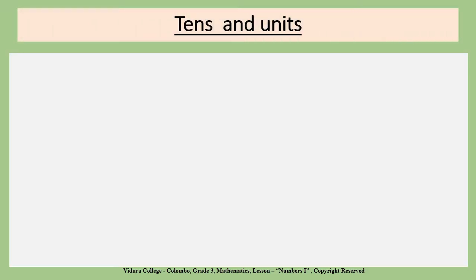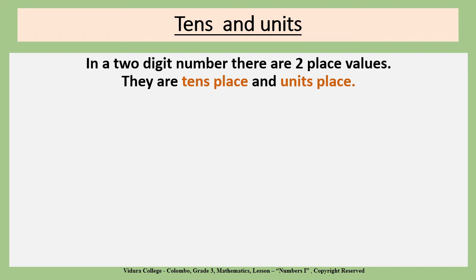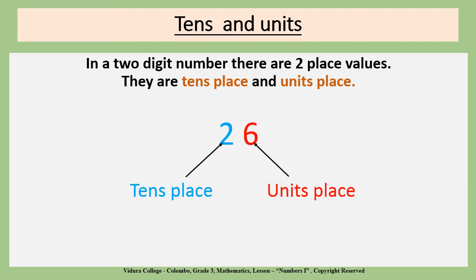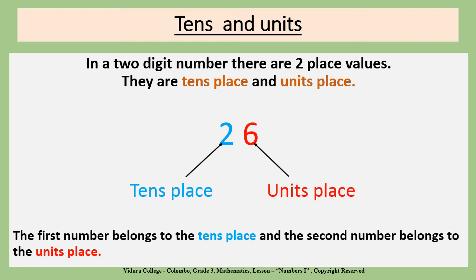Tens and Units. Children, in a two-digit number there are two place values: tens place and units place. Look at this example. In the number 26, the two place values are written in two different colors. The first digit belongs to the tens place and the second digit belongs to the units place. So the tens place number is 2, and the units place number is 6.